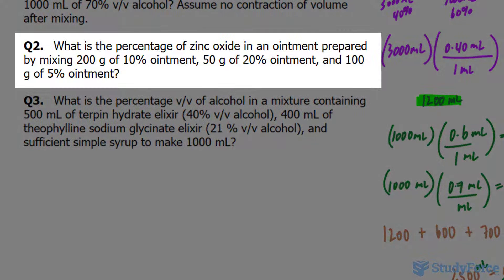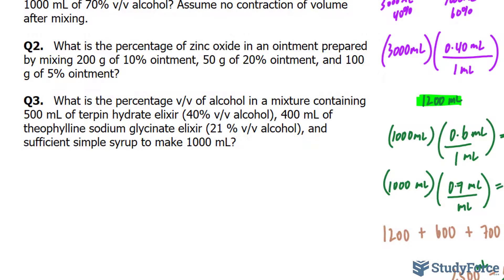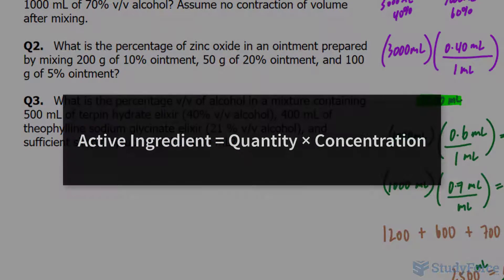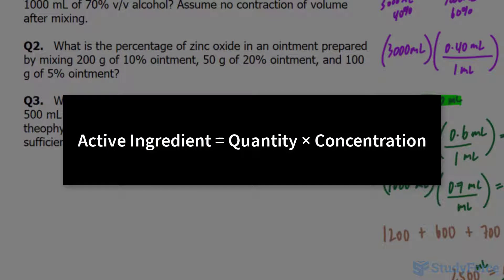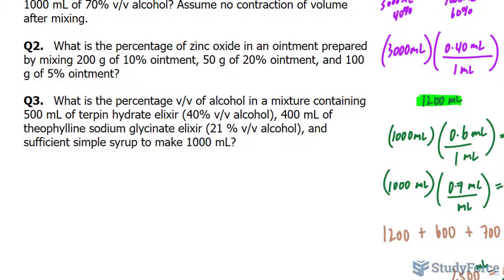Question two reads, what is the percentage of zinc oxide in an ointment prepared by mixing 200 grams of 10% ointment, 50 grams of 20% ointment, and 10 grams of 5% ointment. So we learned that to solve problems using the alligation medial method, you have to find out the amount of active ingredient for each of the substances that make up the mixture. And you find the active ingredient by taking its quantity and multiplying it by its concentration. Once you have all the active ingredients of all the parts, you sum them up and that should equal to the amount of active ingredient found in the final mixture.